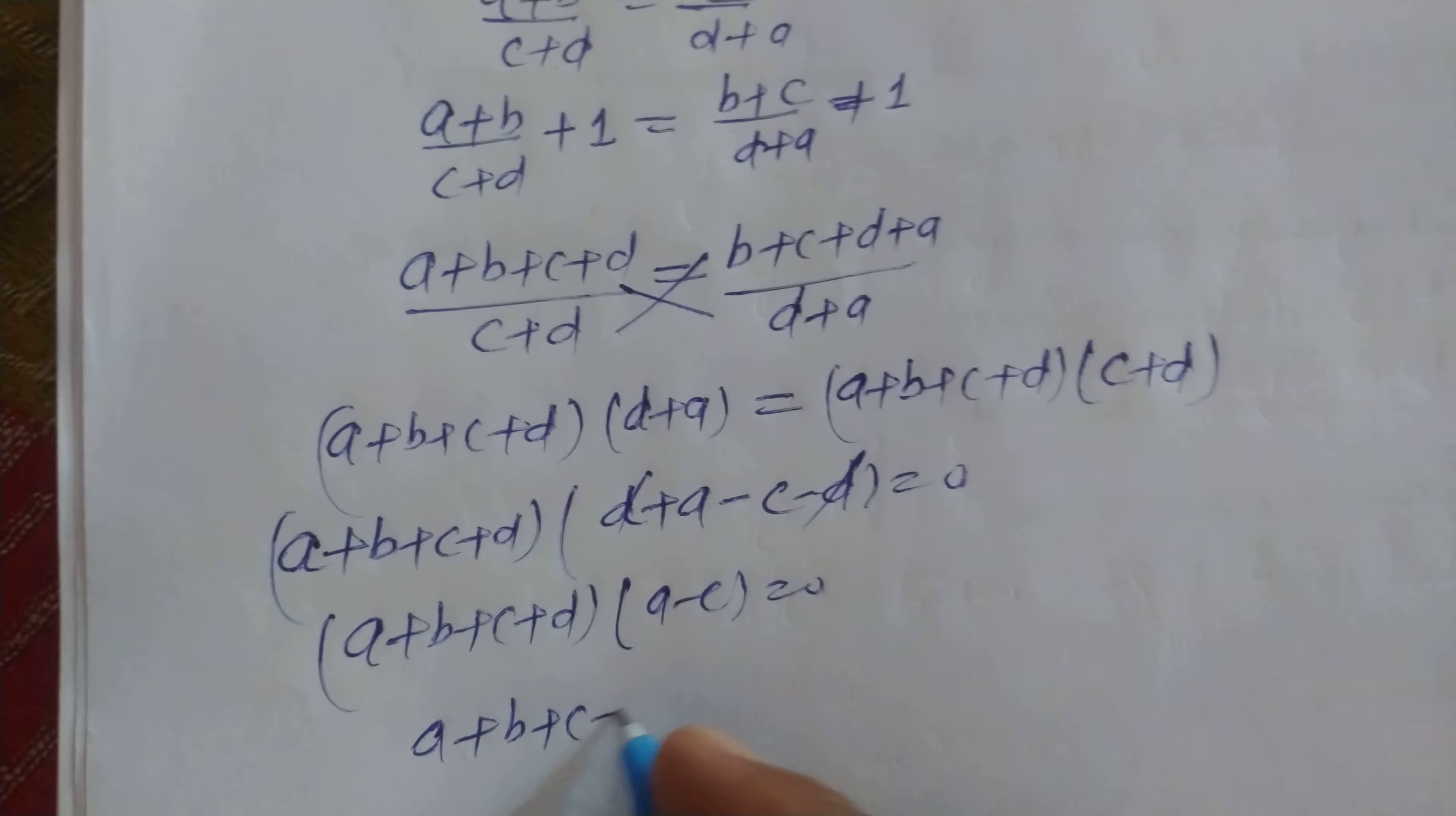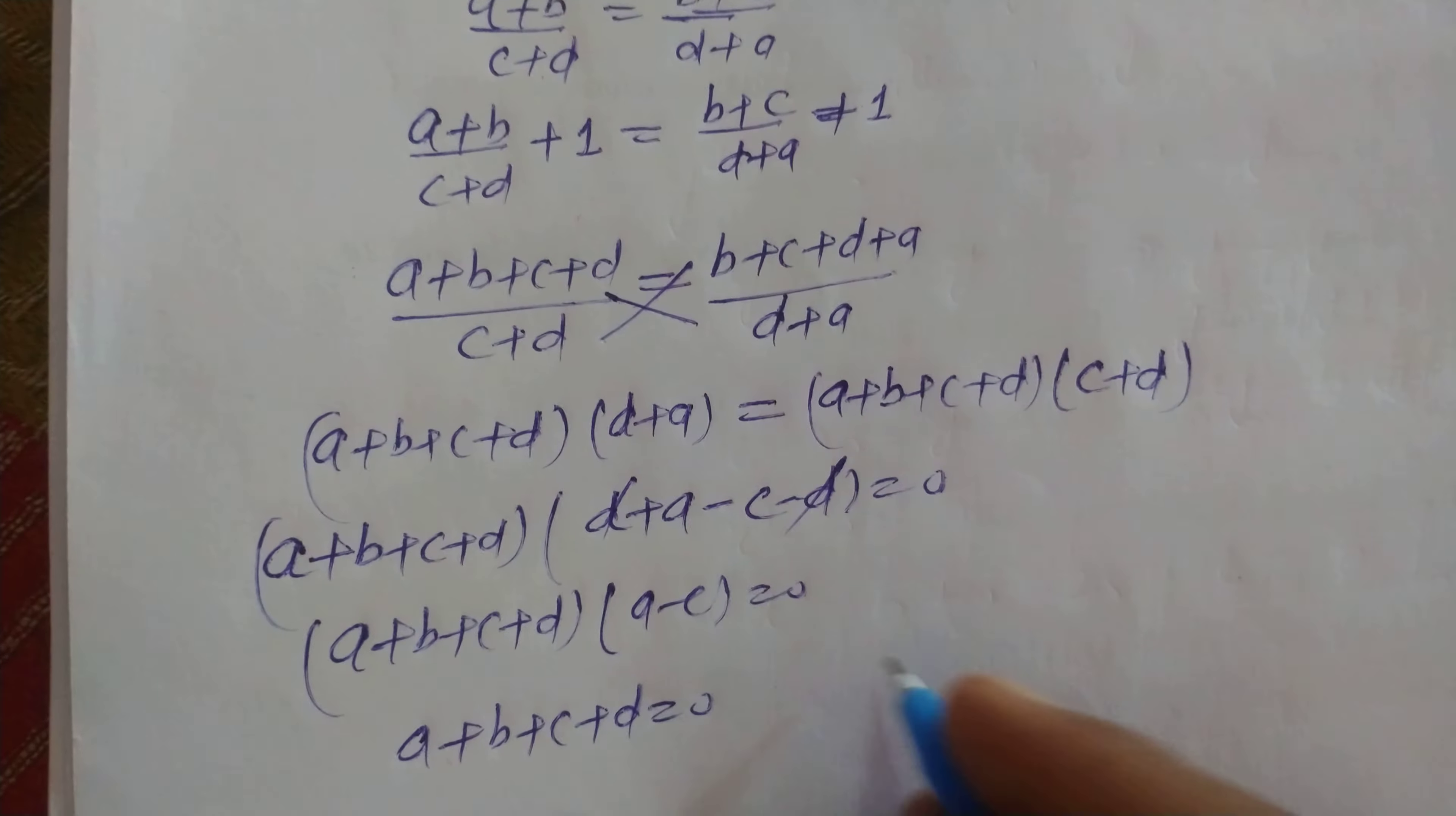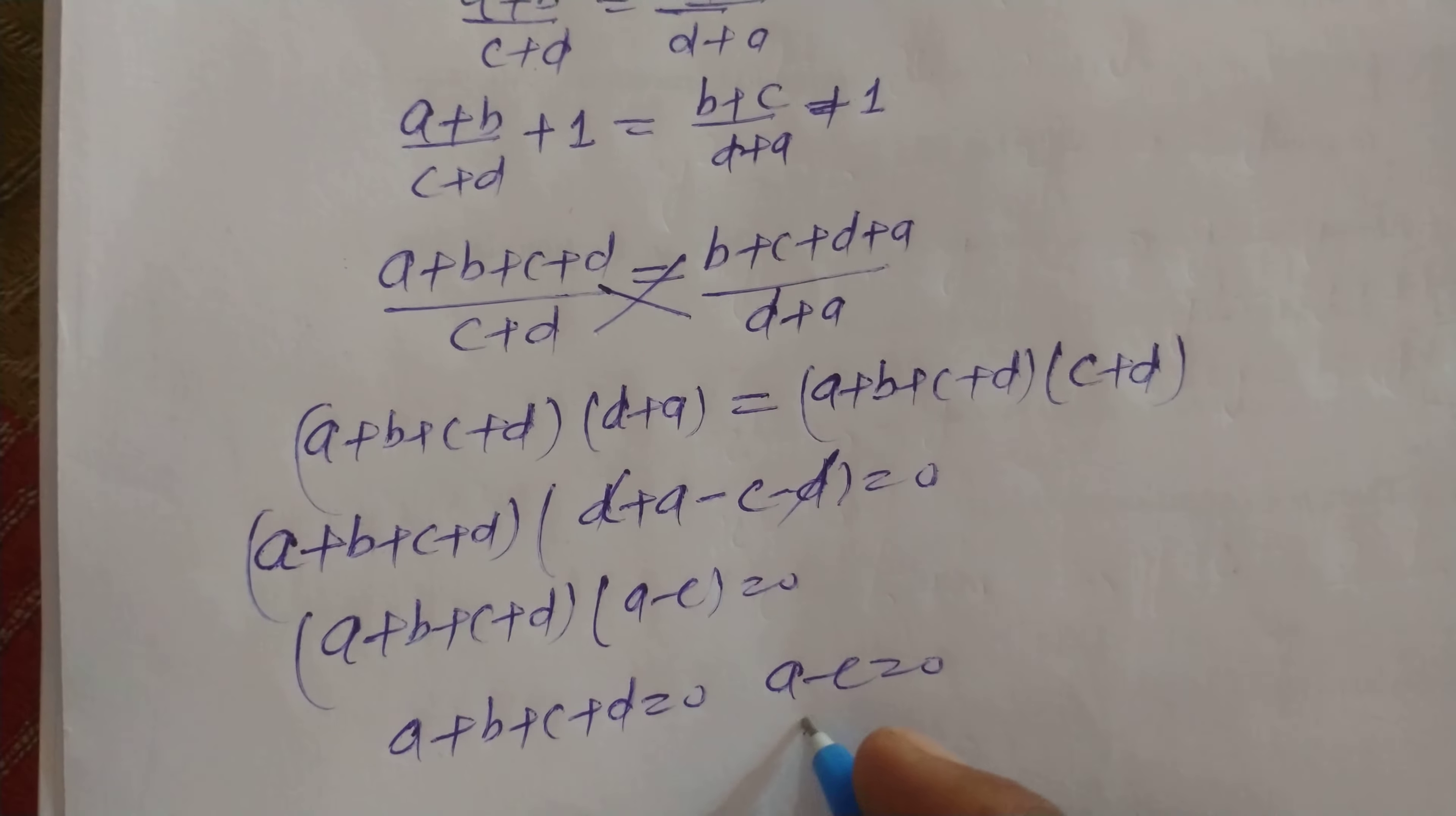When we put them one by one equal to 0, we get A + B + C + D = 0, or A - C = 0.